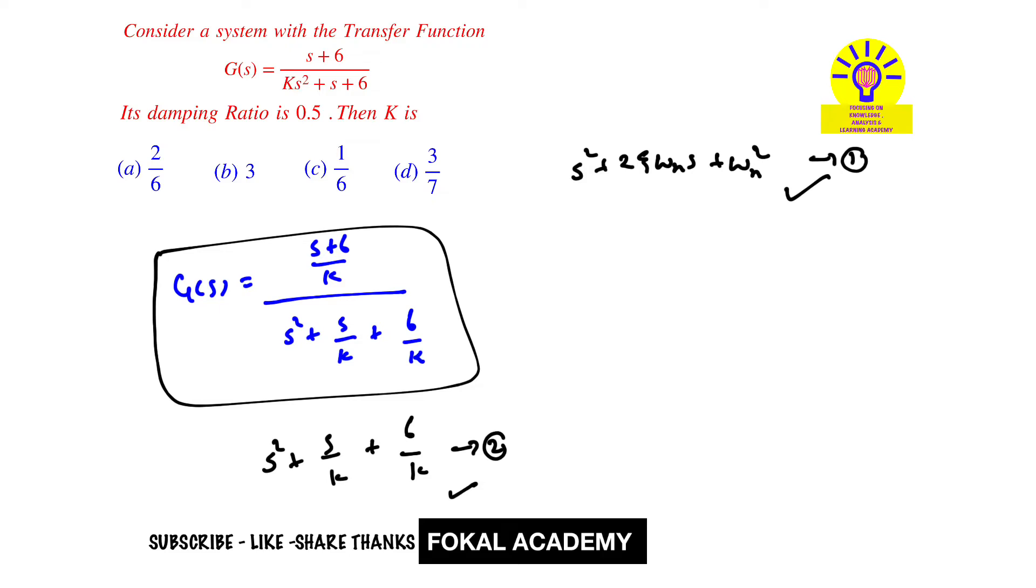So from this we get omega_n^2 = 6/k and 2*zeta*omega_n = 1/k.